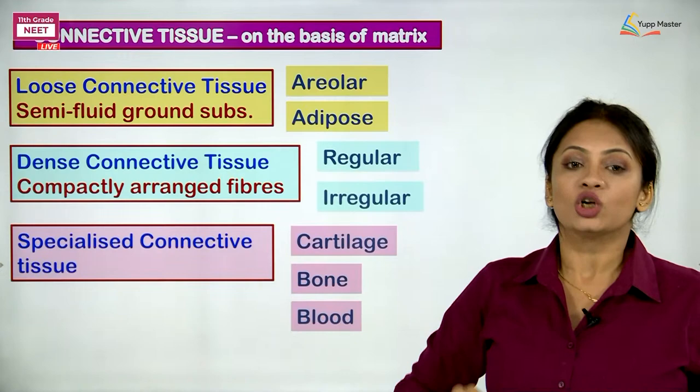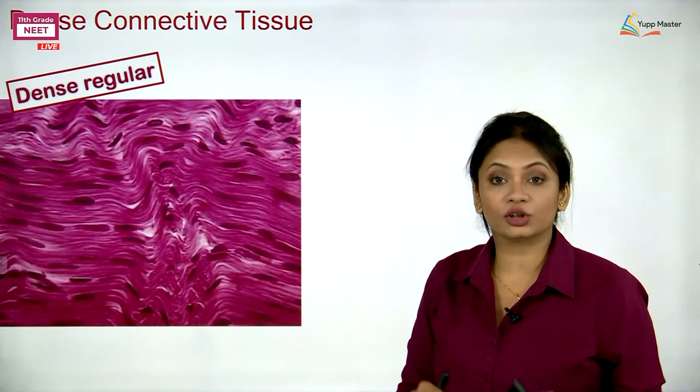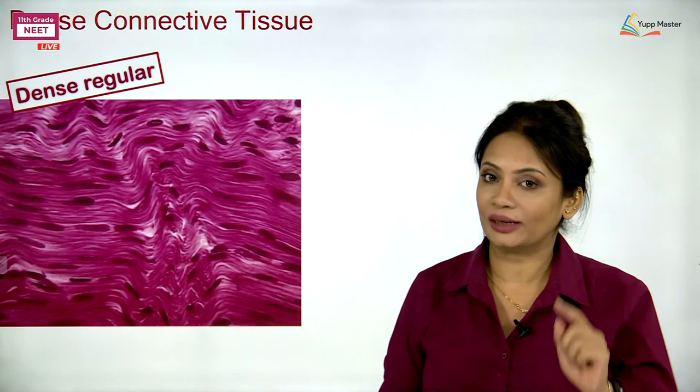And finally, the specialized connective tissue which has cartilage, bone, and blood. So let us continue with what we left off yesterday — that is dense connective tissue. In this dense connective tissue, the two major components are: one, the cells which are the fibroblasts, and two, the fibres, majorly the collagen fibres.